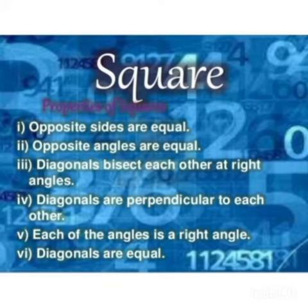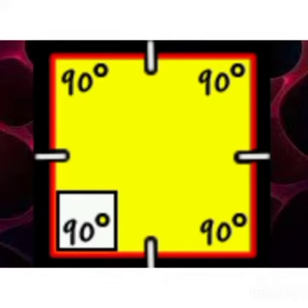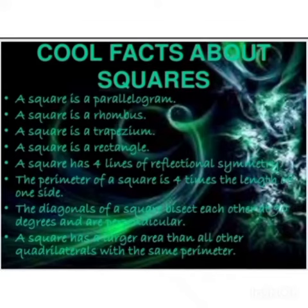Square. In a square, opposite sides are equal. Opposite angles are equal. The diagonals bisect each other at right angles. Diagonals are perpendicular to each other. Each of the angles is a right angle.